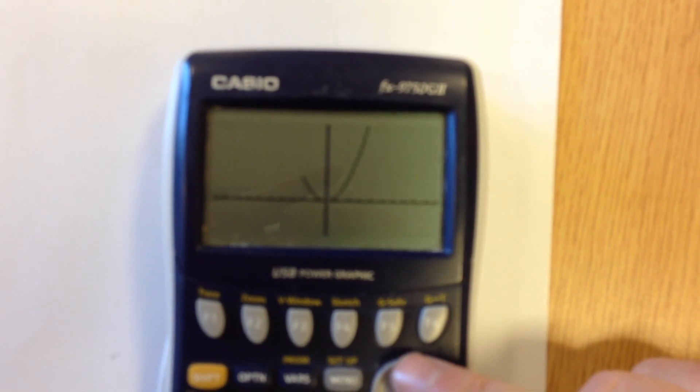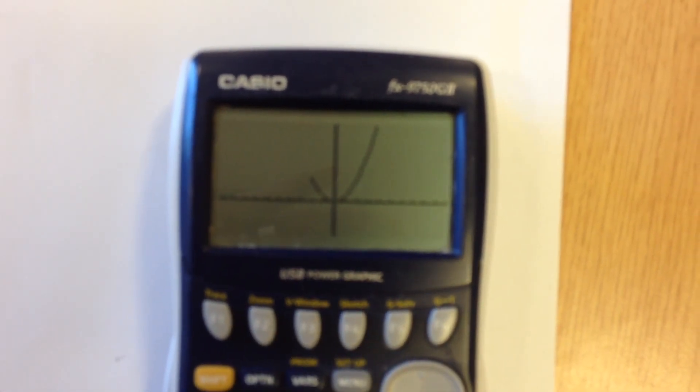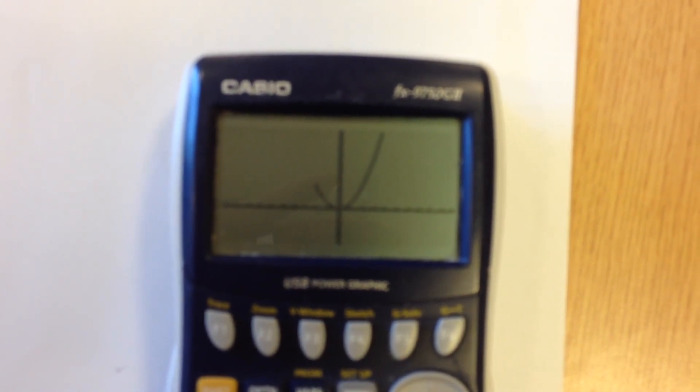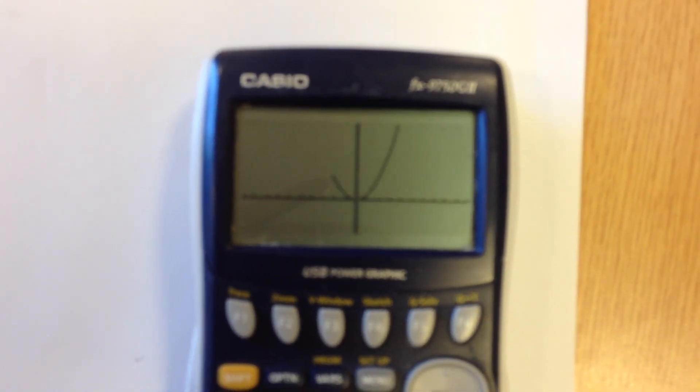You can see there it's much lower on the left-hand side than the right-hand side because it's going from minus 2 on the x up to 5 on the x axis.